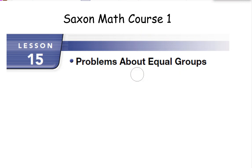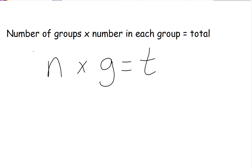Today's lesson is lesson 15, Problems About Equal Groups. An equal groups problem is a multiplication problem. We always have the number of groups, or n, times the number in each group, or g, equals our total.